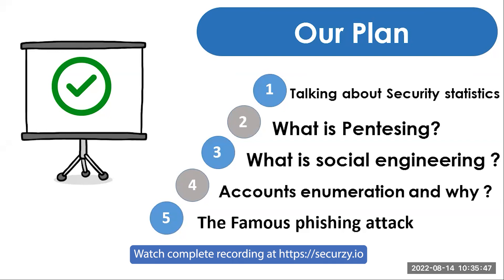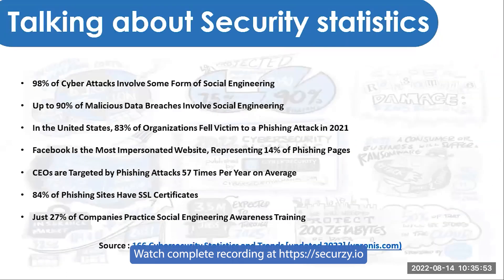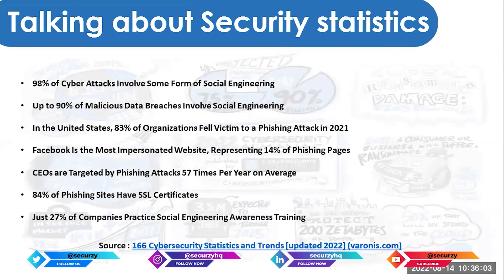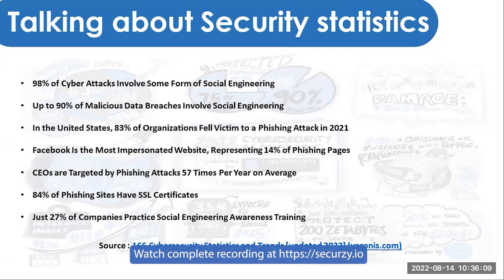Let's start with some statistics and numbers. The 2021 numbers are crazy — a lot of interesting and catastrophic figures. You can check these numbers on the source website I've provided. One of the most striking: 98% of cybersecurity attacks involve some form of social engineering.